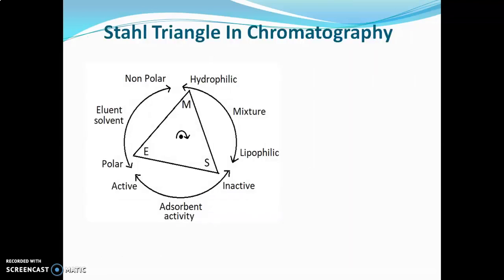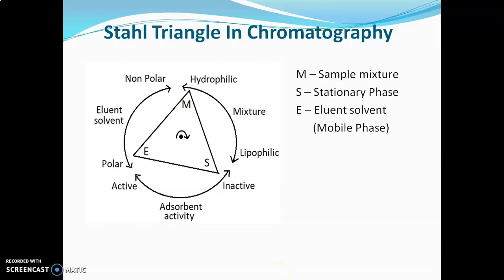Now, Stahl's triangle. By using Stahl's triangle, we can select the stationary phase and mobile phase for our sample. The M end of the triangle indicates sample mixture, S indicates stationary phase, and E is eluant — solvent or mobile phase. If we know the nature of the sample, by rotating the triangle we can select the mobile phase and stationary phase. For example, if our sample is hydrophilic, our stationary phase should be inactive and our mobile phase should be polar in nature. Using Stahl's triangle makes it easy to select the mobile phase and adsorbent.